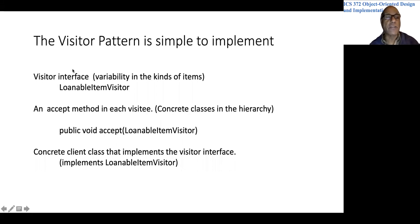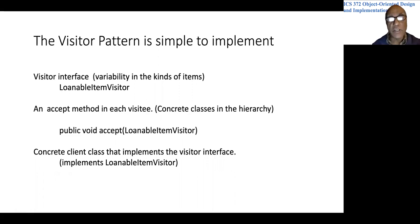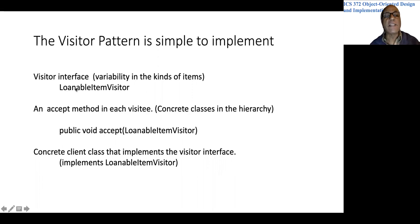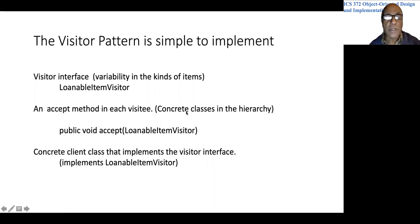So what does the Visitor pattern involve? It involves an interface called the Visitor interface. Let's assume we have the enhanced version of the library with LoanableItem as a superclass and a hierarchy of classes like Book, Periodical, CD, DVD, etc., extending LoanableItem. The typical naming pattern for the visitor interface would be the name of the superclass — LoanableItem in this case — followed by the word Visitor, so LoanableItemVisitor. Then we put in one method in each of the classes in the hierarchy, and we generally call that method accept.